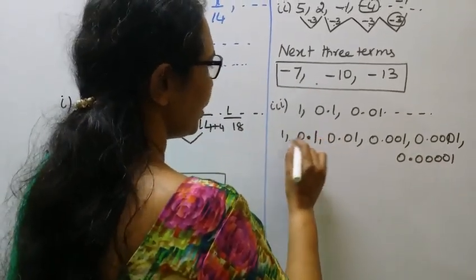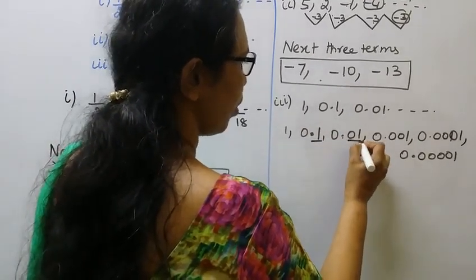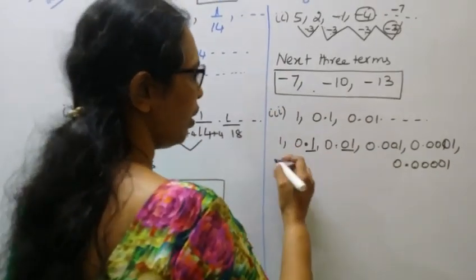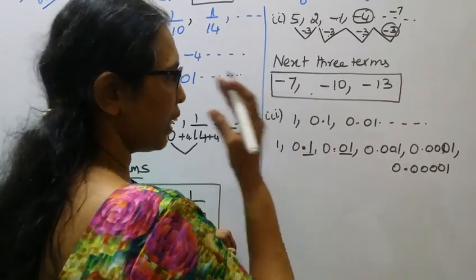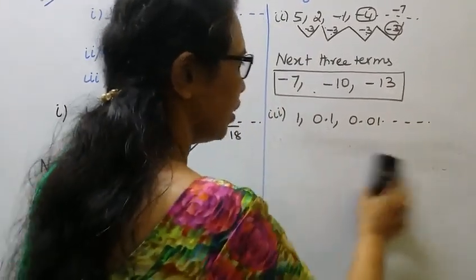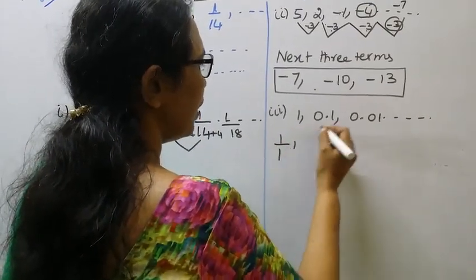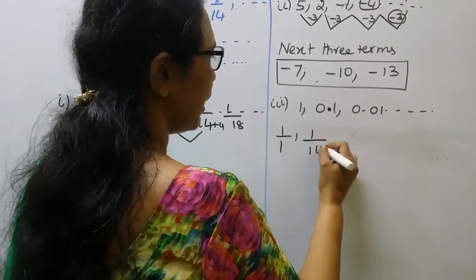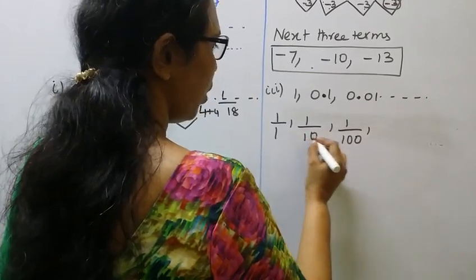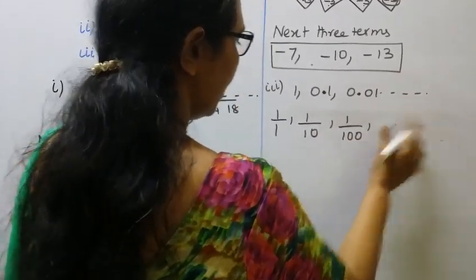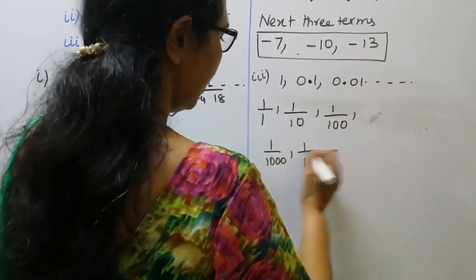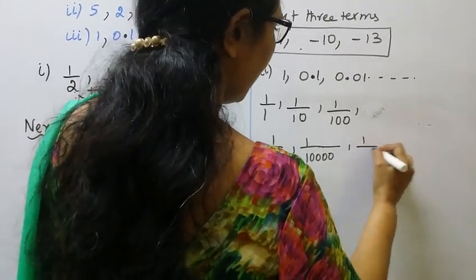This is expressed as fractions: 1 is 1/1, 0.1 is 1/10, 0.01 is 1/100 — two decimal places, 1/100. Each term divides by 10.